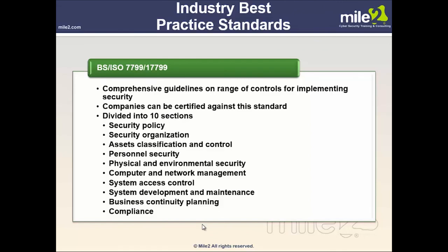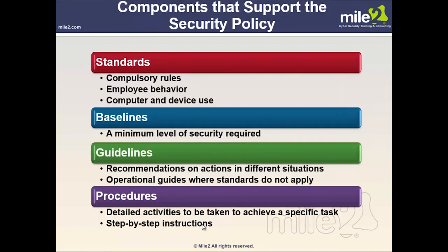Industry best practice standards include BS/ISO 7799 and ISO 17799 — comprehensive guidelines on controls for implementing security. Companies can be certified against these standards. They are divided into 10 sections: security policy, security organization, asset classification and control, personnel security, physical and environmental security, computer and network management, system development and maintenance, business continuity planning, and compliance. Supporting components include standards (compulsory rules), baselines (minimum required security levels), and guidelines (recommendations for various situations).